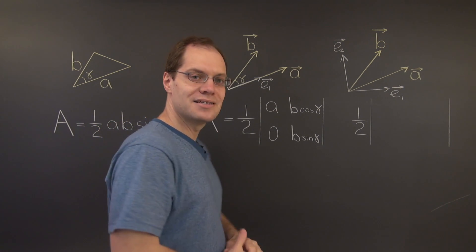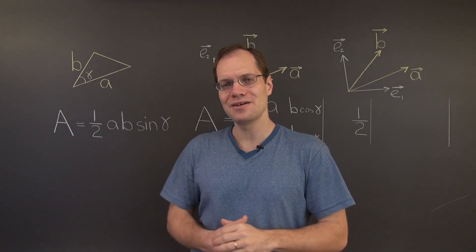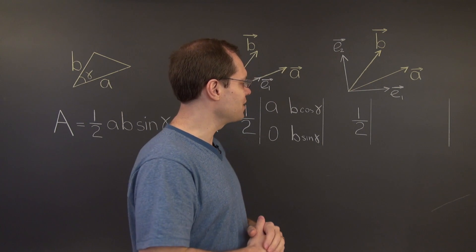And the answer, I won't write it down, is one half A B sine gamma. That's the first way of deriving this formula. Now for the second, more generic way.